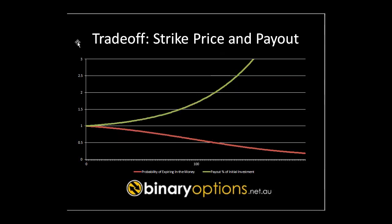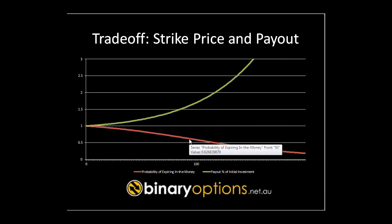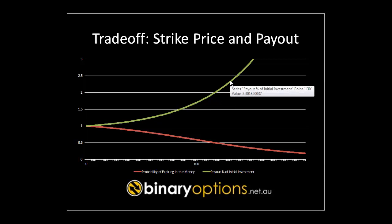Generally, binary options with a higher probability of paying off will have a lower payout percentage. On this chart, along the x-axis, we have the strike price of a binary call option. The red line represents the probability of expiring in the money, and the green line represents the payout as a percentage of the initial investment.